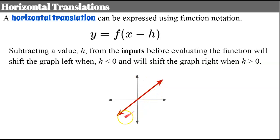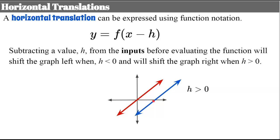Here's our parent function, F of X equals X. When H is greater than zero, our line has been transformed horizontally to the right. When H is less than zero, our line has been transformed horizontally to the left.